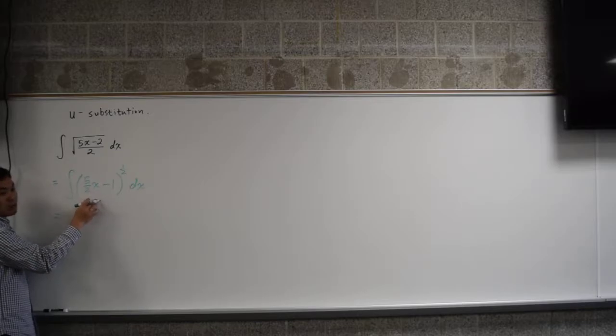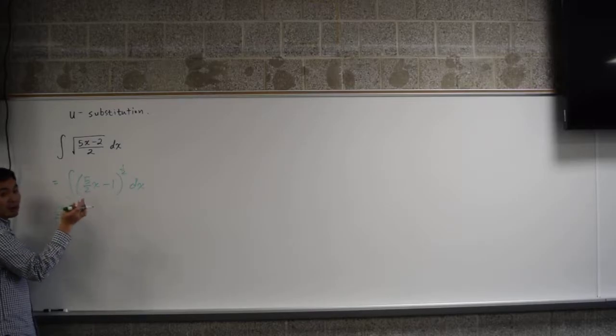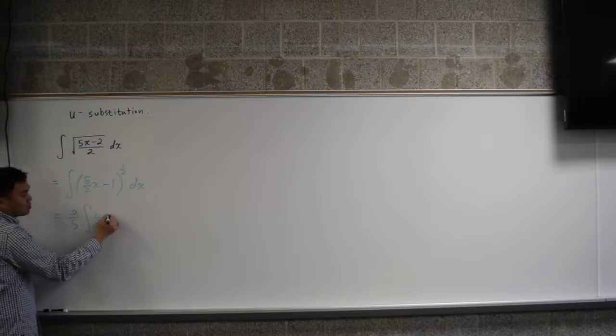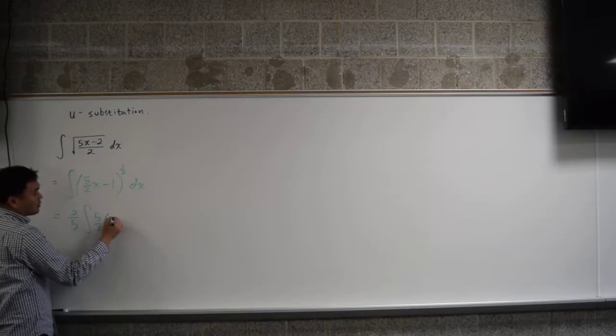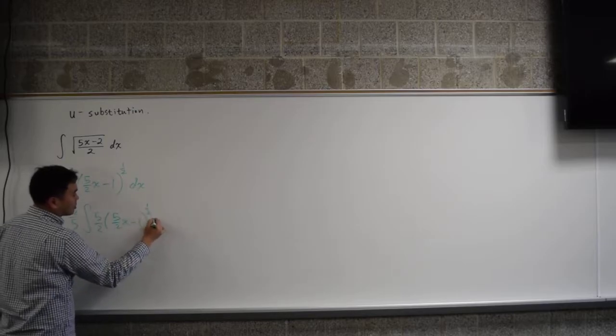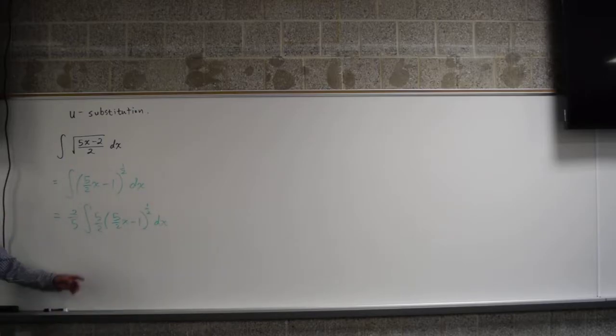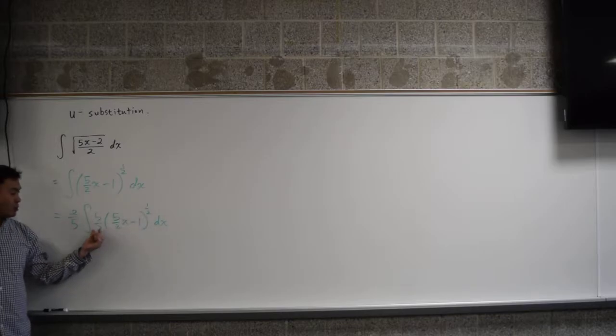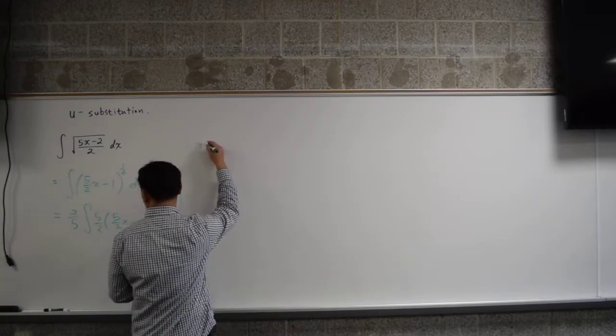So what kind of artifact do I need? I need 5 over 2 outside. And now, because the derivative of this is that, I can just regard this as like u to the 1 half power, and this is going to go away when you undo the chain rule. So let's see what that gives us.